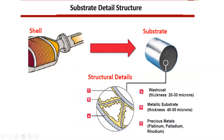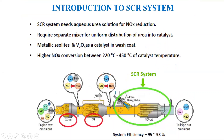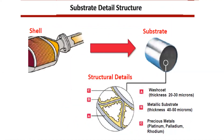This is how the substrate looks basically. The substrate has the wash coat, it has the metallic substrate, and the catalysts are coated on it. The catalyst is present over the black region, and in the yellow region you have the metallic substrate, which ranges in thickness from 40 to 50 microns. The region highlighted in light blue has a thickness range of 20 to 30 microns.